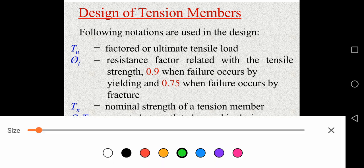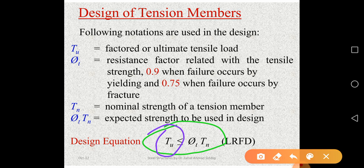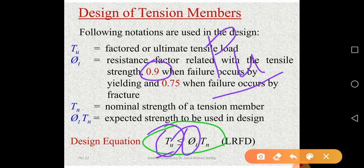The basic equation for design of tension members is: Tu should be less than or equal to φt·Tn. In this equation, Tu is the factored ultimate tensile load — similar to how we have Pu for compression, we use Tu for tension. And φt is a reduction factor, or resistance factor, whose value can be either 0.9 or 0.75.